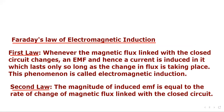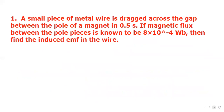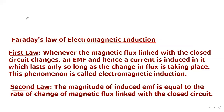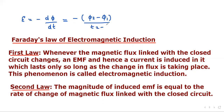This phenomenon is called electromagnetic induction. Second law: the magnitude of induced EMF is equal to the rate of change of magnetic flux linked with the closed circuit. Mathematically, we can write it as E = −dφ/dt. Here, the negative sign indicates that the direction of induced EMF is such that it opposes the change in magnetic flux. This can also be written as E = −(φ₂ − φ₁) / (t₂ − t₁).